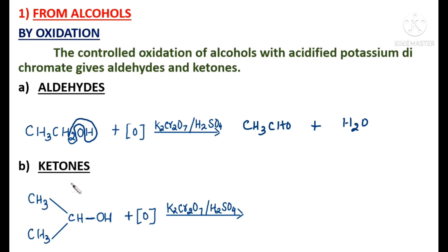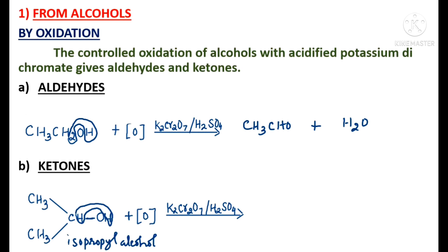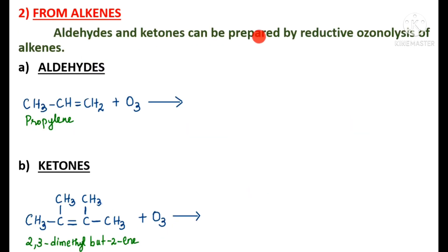Ketones are obtained by the oxidation of secondary alcohols. I have taken isopropyl alcohol, which is a secondary alcohol. When this undergoes oxidation in the presence of acidified potassium dichromate, the hydrogen from this carbon and the OH hydrogen are removed as a water molecule, and we get a ketone: CH3-C(=O)-CH3, which is acetone or dimethyl ketone.